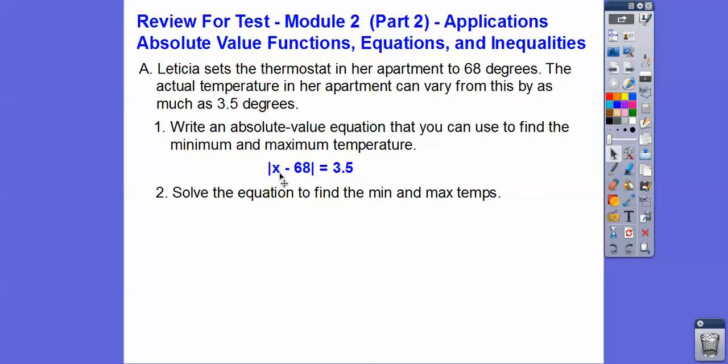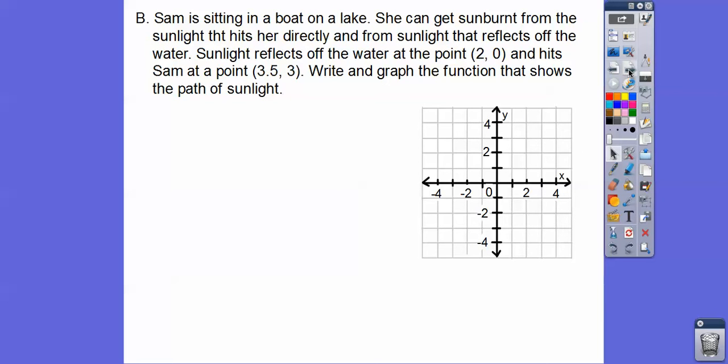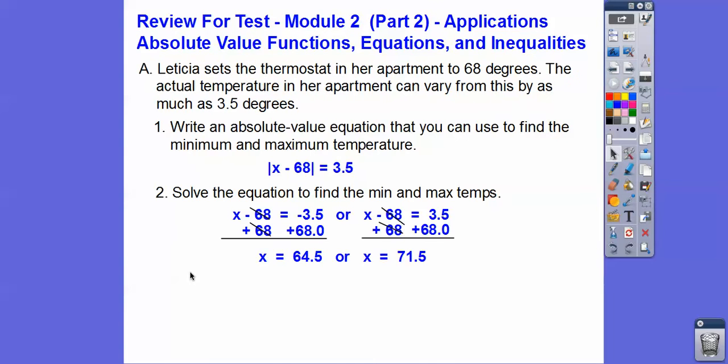So the difference between her thermostat and the 68 degrees that she has it set at is 3.5 degrees. So this is where we're going to set it equal to positive 3.5 and negative 3.5. Now we just add 68. So her temperature can range from 64.5 degrees to 71.5 degrees. So the temperatures can range from 64.5 degrees to 71.5 degrees.